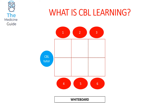Depending on the CBL tutor, members of the group may be asked to act as a scribe and a chair. The chair helps guide the direction of the group's discussion, while the scribe writes key discussions and topics on the whiteboard, condensing the key aspects of the case. The whole point of CBL is to introduce the case together as a group and consider differentials, as this acts as your benchmark for all the reading and note-taking you'll do over the next few days.